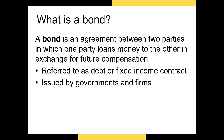When we talk about a bond we're referring to an agreement between two parties — a borrower and a lender, or sometimes a group of lenders — in which the lenders provide cash to the borrower in exchange for some future compensation. Bonds are a type of debt, sometimes referred to as fixed income, meaning that the lenders are entitled to some specific compensation or income at fixed dates.